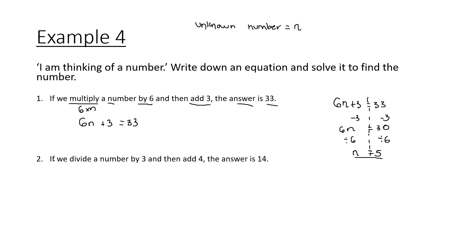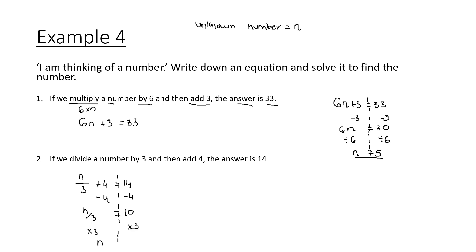Second example: if we divide a number by 3 and then add 4, our answer is 14. Our unknown number is n, so the equation is n divided by 3 plus 4 equals 14. Subtract 4 from both sides, leaving n divided by 3 equals 10. Opposite of divide is multiply, so multiply both sides by 3, giving n equals 30.